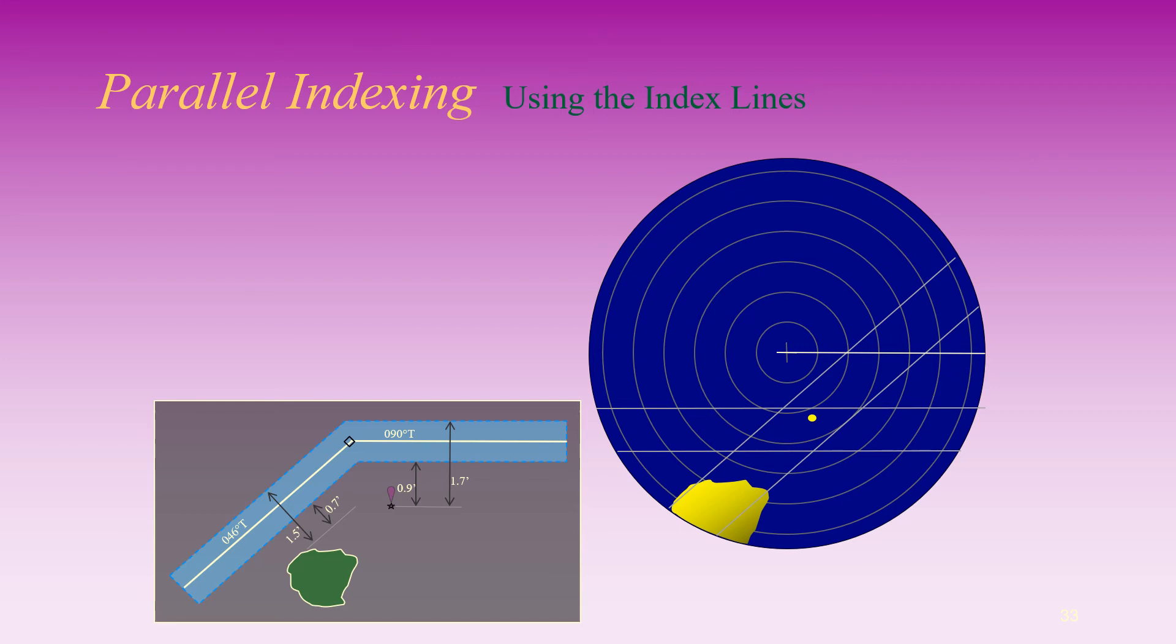In the second leg, 090 degrees true, the light beacon appears between the two index lines, indicating that the vessel is within the traffic lane. However, it is not in the middle between the two index lines.